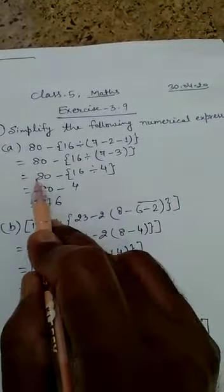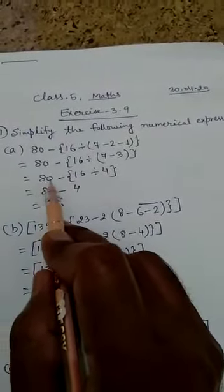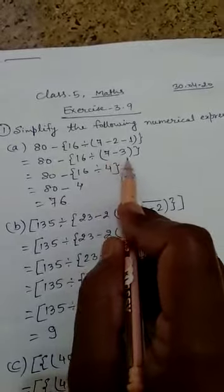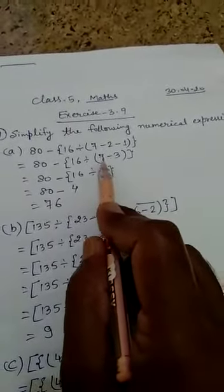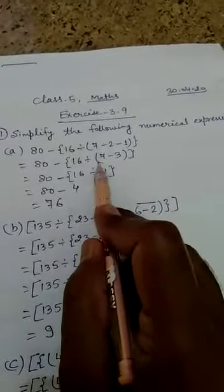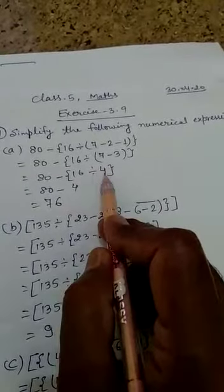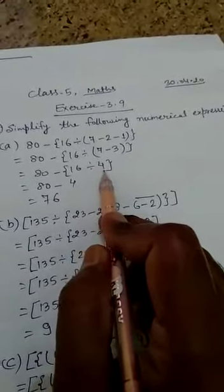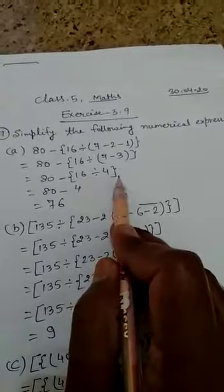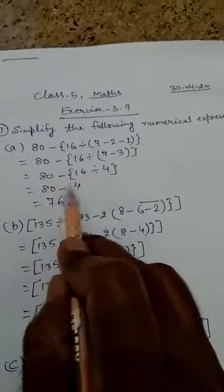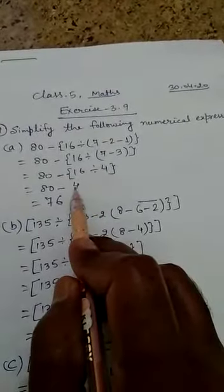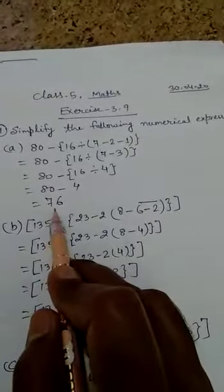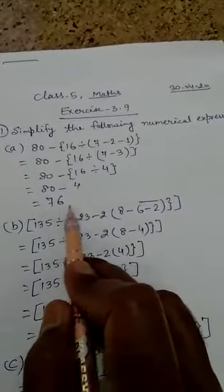In the third step, we have 80 minus curly braces, 16 divided by — now removing the small braces, 7 minus 3 equals 4. So we now have 80 minus 16 divided by 4. Then removing the curly braces, 16 divided by 4 equals 4. Now 80 minus 4 equals 76. Finally, the answer is 76.